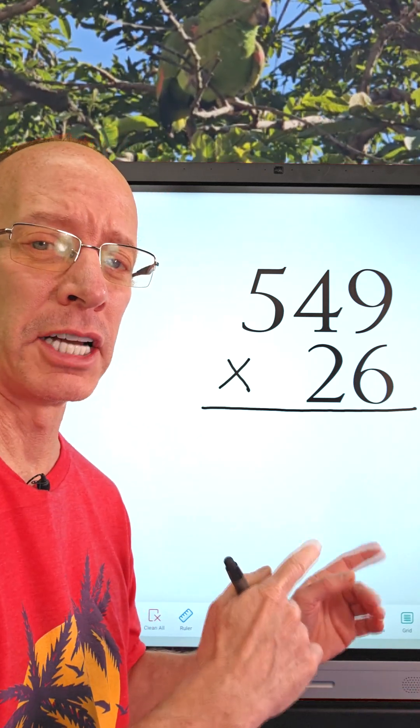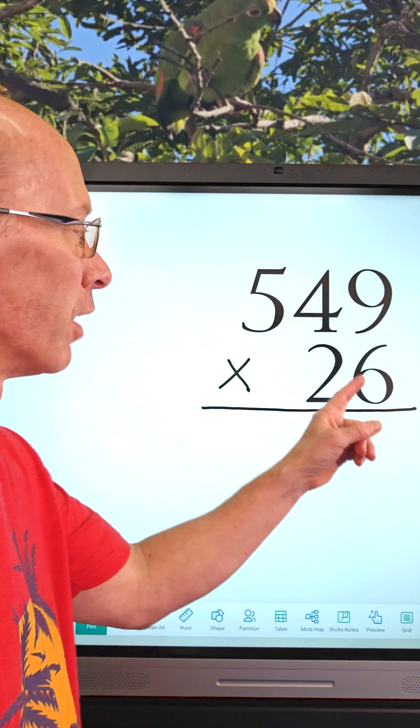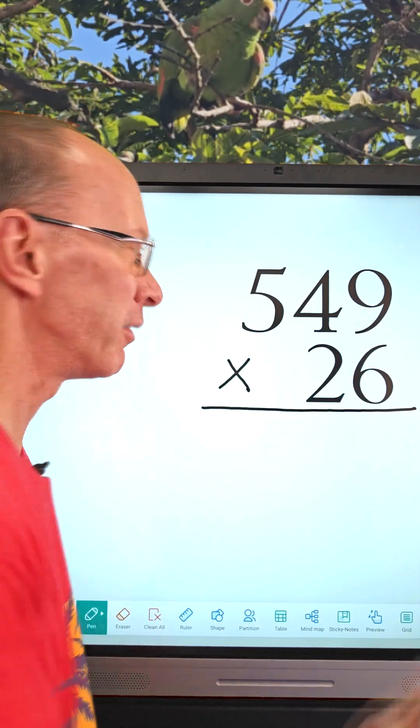Hey, welcome to the show. You're ready to do some multiplication with some big numbers? All right, let's go ahead and get started. First of all, I'm going to take 6 times 9. What is 6 times 9? 54.